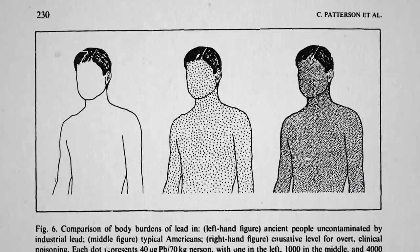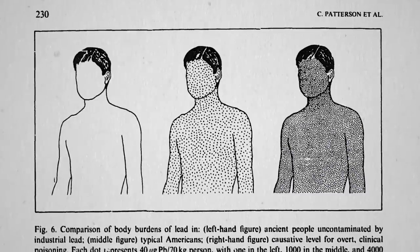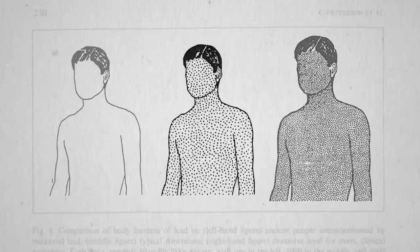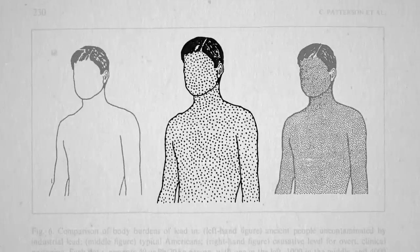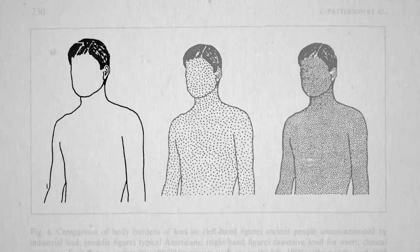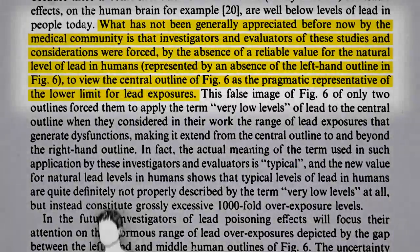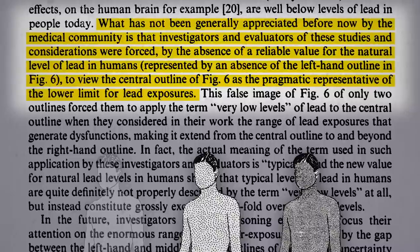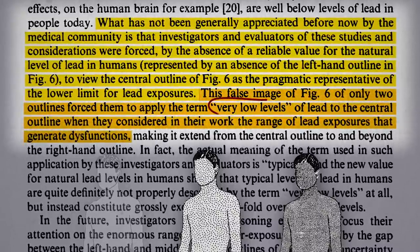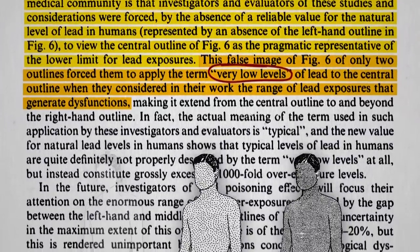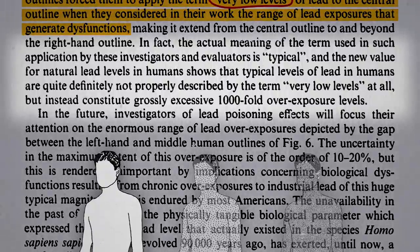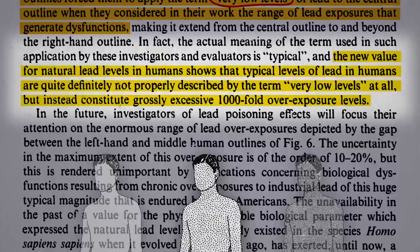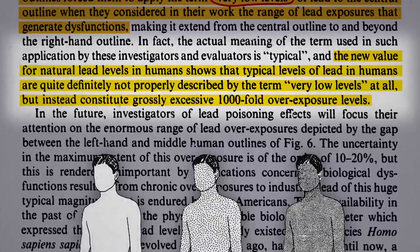This indicates the probable existence within most Americans of dysfunctions caused by chronic excessive overexposure to industrial lead. In this graphical representation, each dot represents 40 micrograms of lead. The right figure represents overtly symptomatic lead poisoning; the middle figure is the lead in a typical American citizen; and the left figure is how much was found in pre-industrial bodies. What the medical and research community failed to understand is that typical levels of lead in humans constitute grossly excessive thousand-fold overexposure levels.